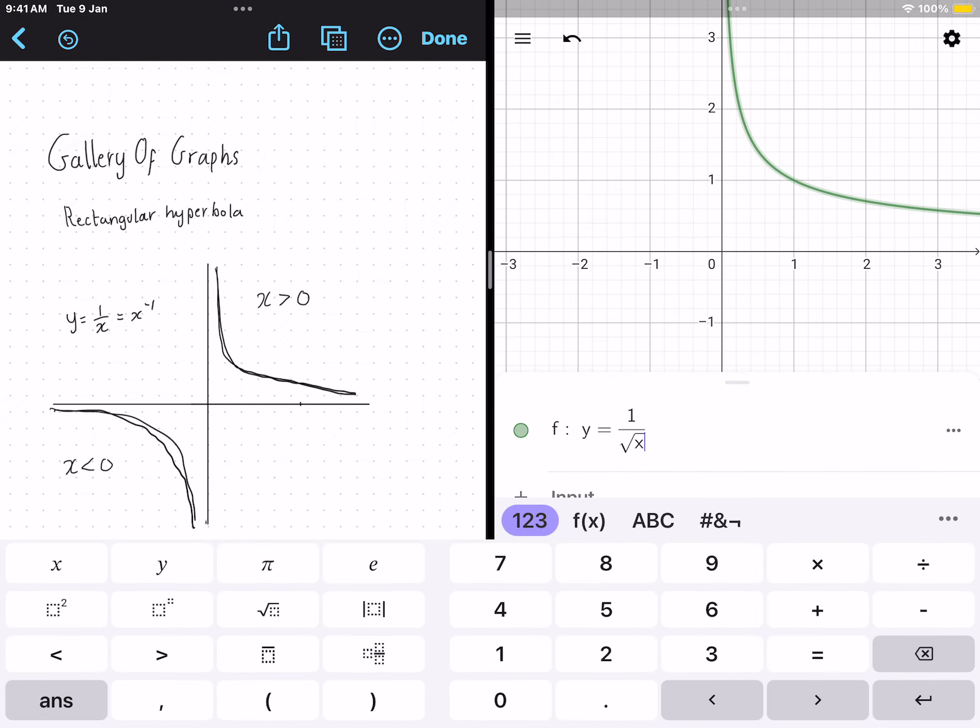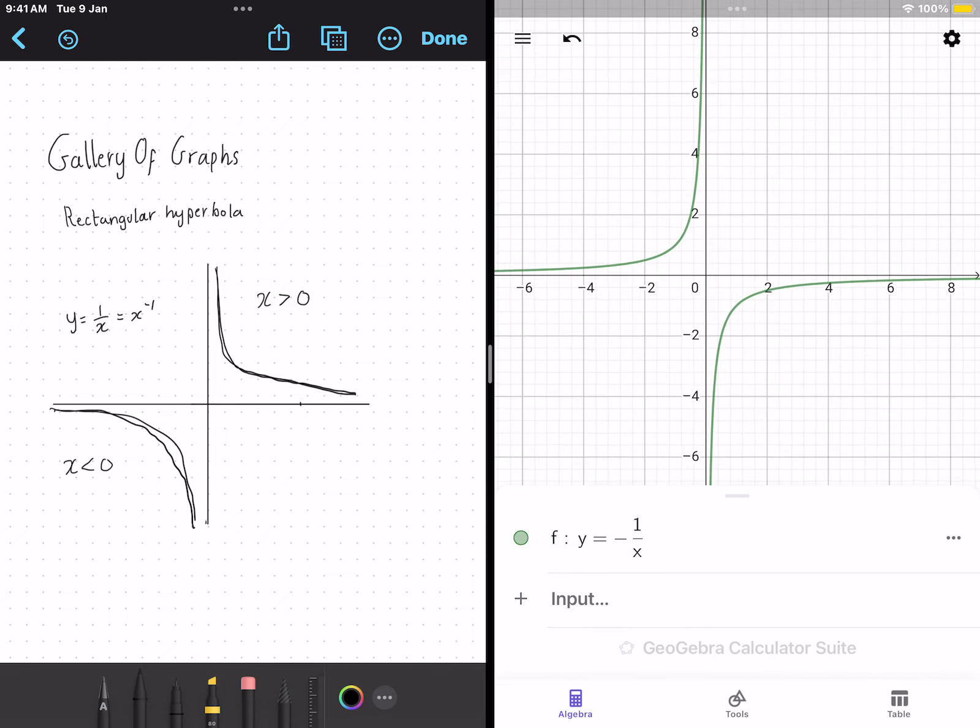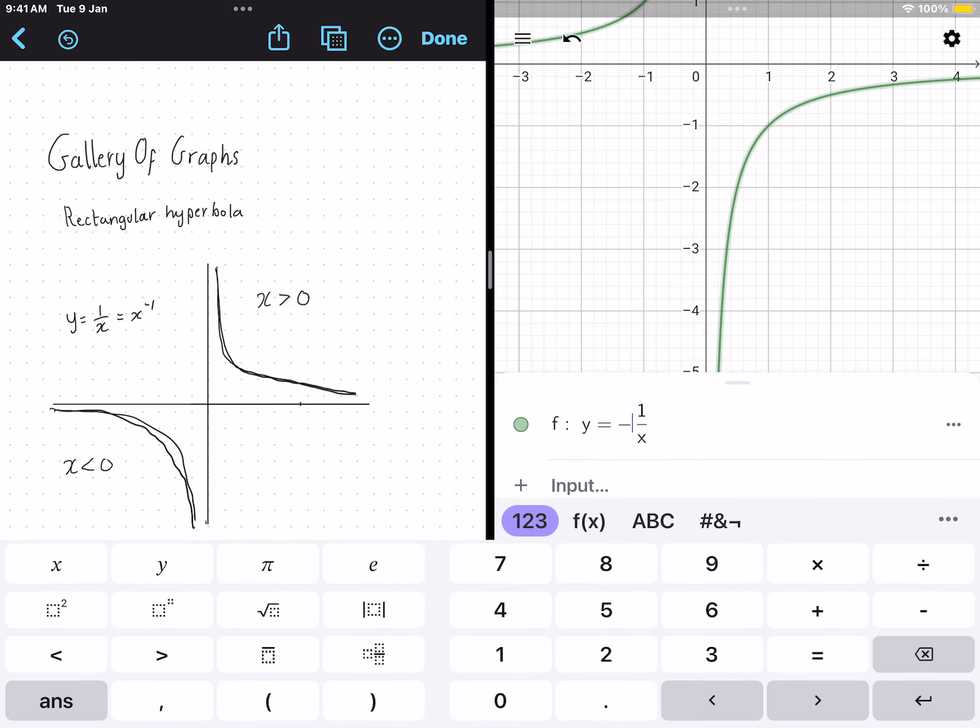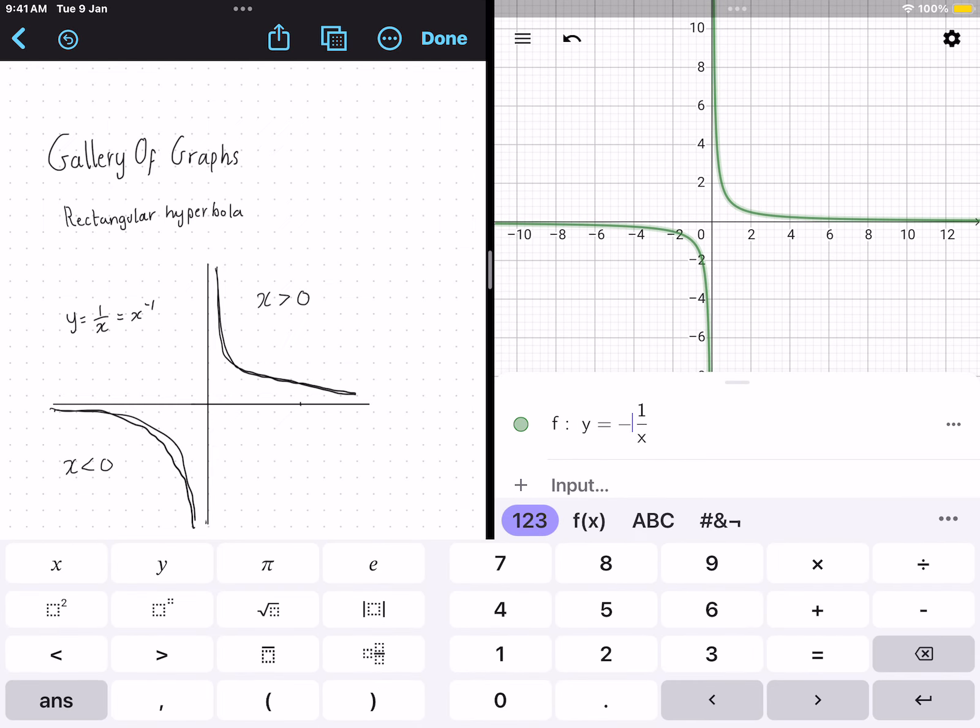Now what if we reflect the normal hyperbola? So we put a minus in front of it. This is what will happen. It switches sides. So this is the normal hyperbola, and this is when it's reflected.